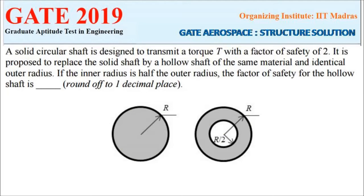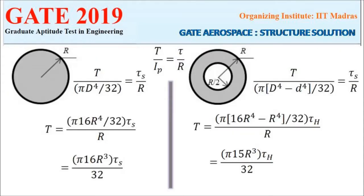Next question: a solid circular shaft is designed to transmit torque T with a factor of safety of 2. It is proposed to replace the solid shaft with a hollow shaft of the same material and identical outer radius, where the inner radius is half the outer radius. We need to find the factor of safety for the hollow shaft, rounded to one decimal place. Recall the torque equation: T/J = τ/r, where J is polar moment of inertia.